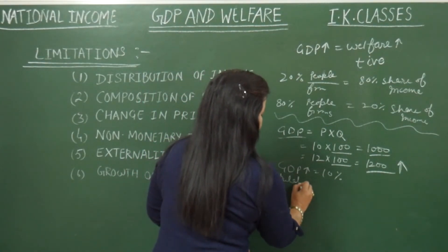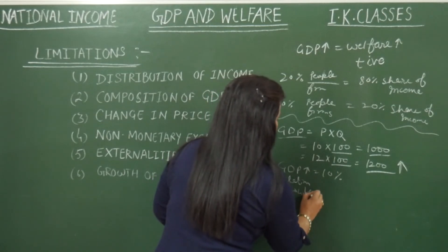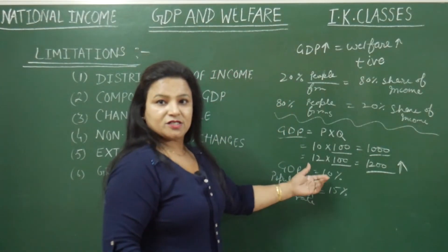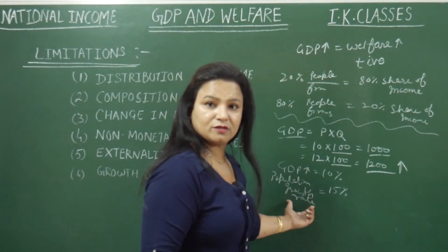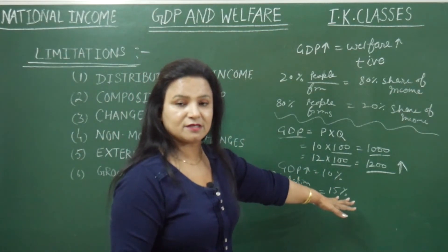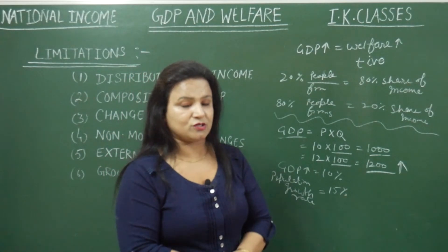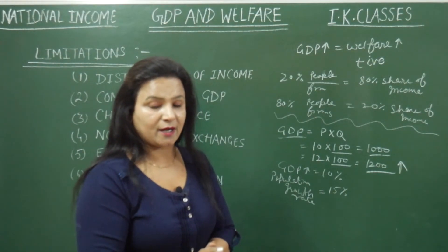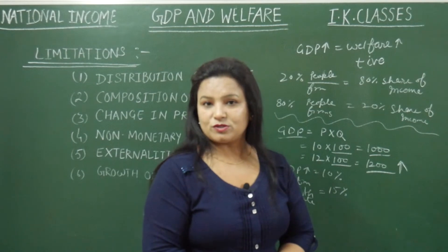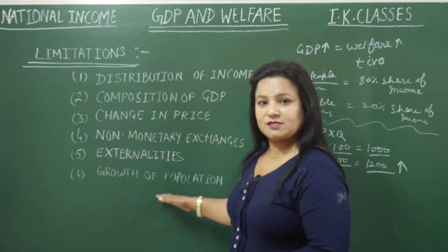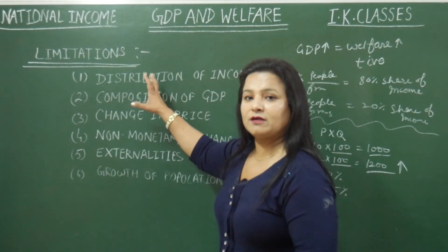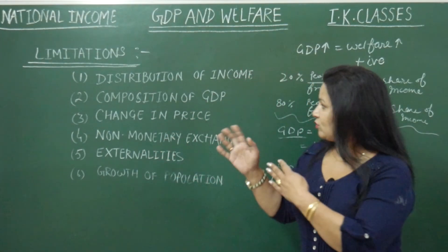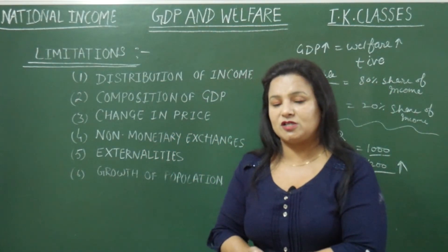The next point is growth of population. If GDP growth rate is 10% but the population growth rate is 15%, then even though production of goods and services has risen, the per head availability of goods and services will actually reduce. So these were some limitations showing that rise in GDP does not necessarily mean rise in welfare, and there is not always a direct positive relationship between GDP and welfare.